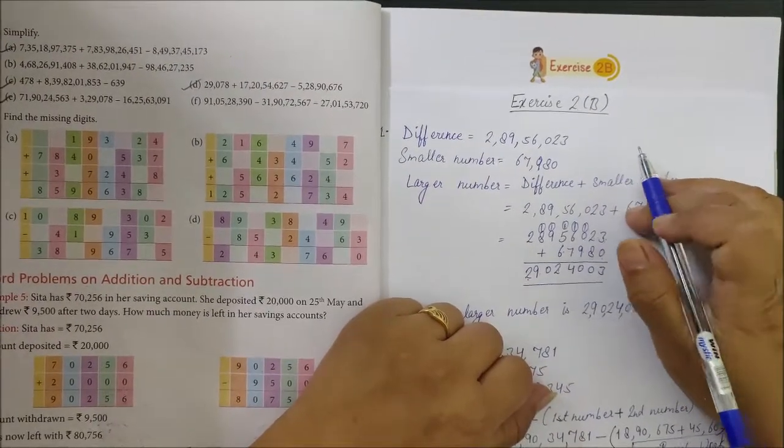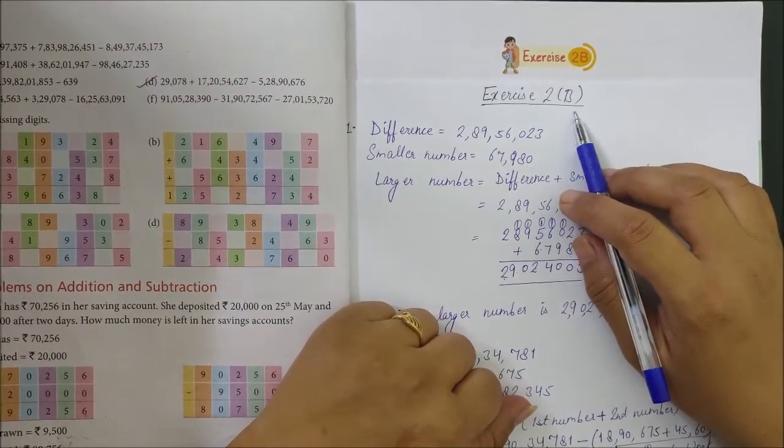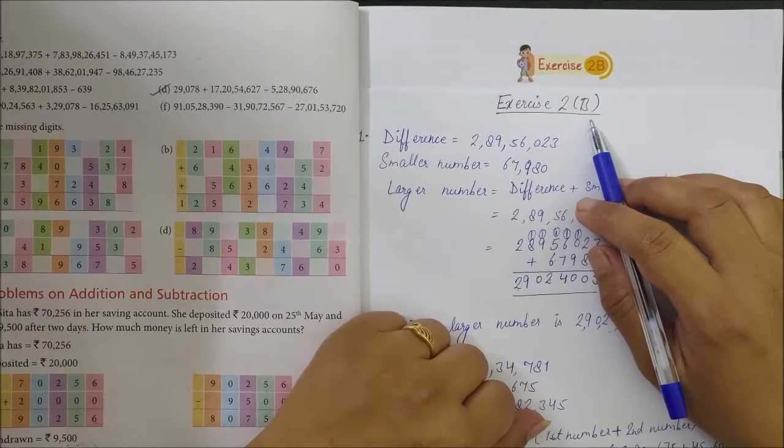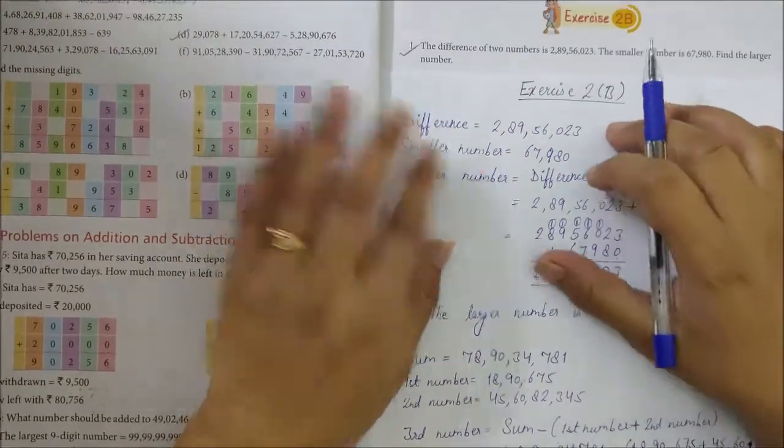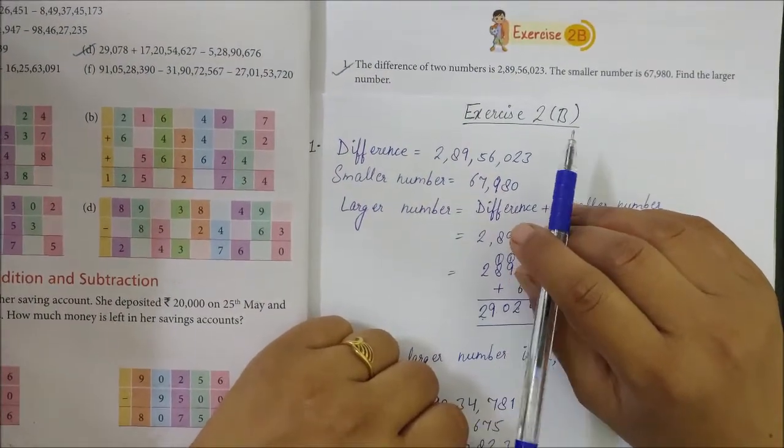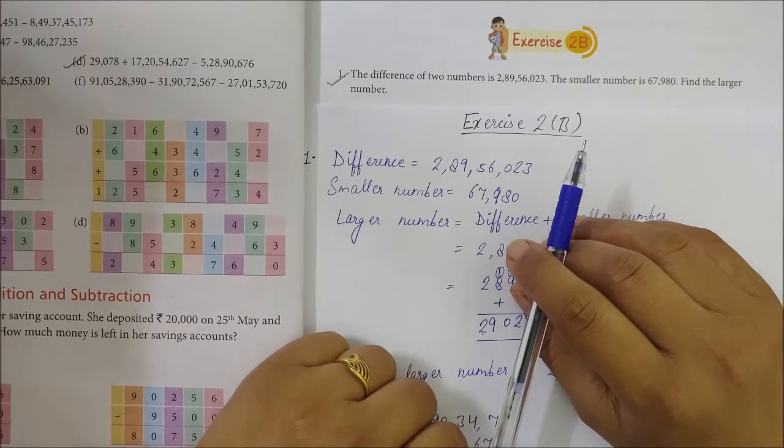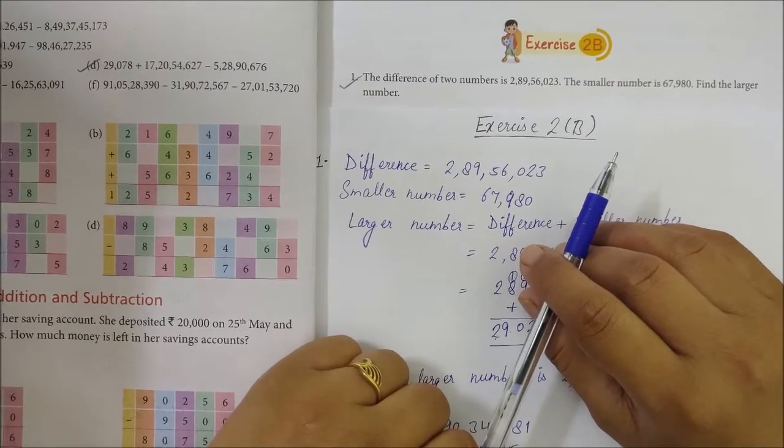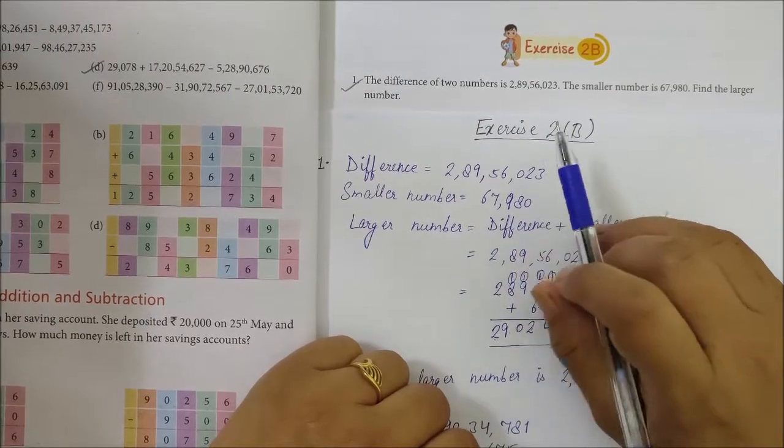Good morning class. Today we will be doing Exercise number 2b. You have finished Exercise number 2a which was based on addition and subtraction. Now Exercise number 2b is all about word problems based on addition and subtraction. You have to read word problems carefully so that you can understand what the question is saying and what is required.